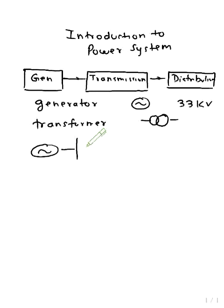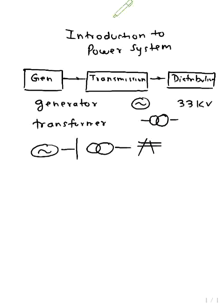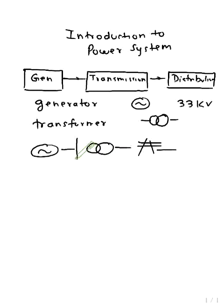The sequence is: generation, then a bus bar grid connected to the transformer, then distribution, and then to the consumers. An important point is that transmission must be at high voltage, and transformers are used for high voltage transmission.